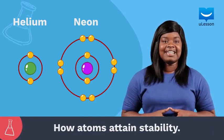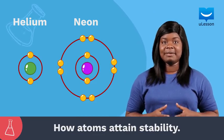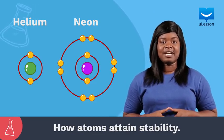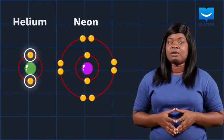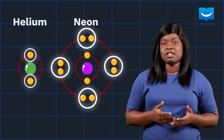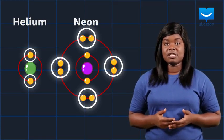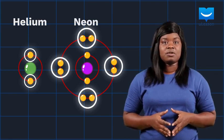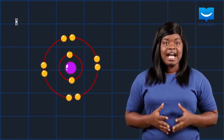In this lesson, we will consider how the atoms of other elements can also attain stability like the noble gases. Since stability is associated with two or eight electrons in the outermost shell of an atom, there is a tendency of atoms of other elements to ensure that they also have two or eight electrons in their outermost shells. And they achieve this through the formation of chemical bonds with the atoms of other elements.